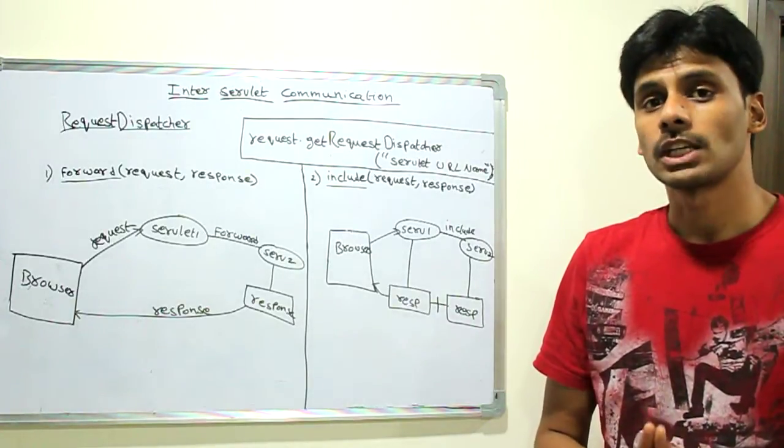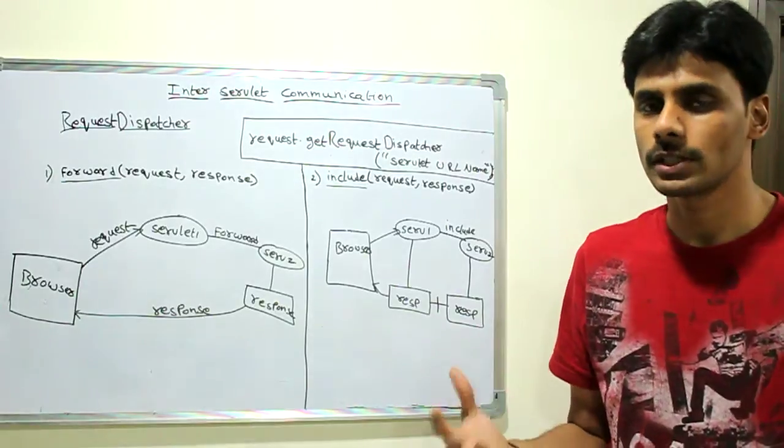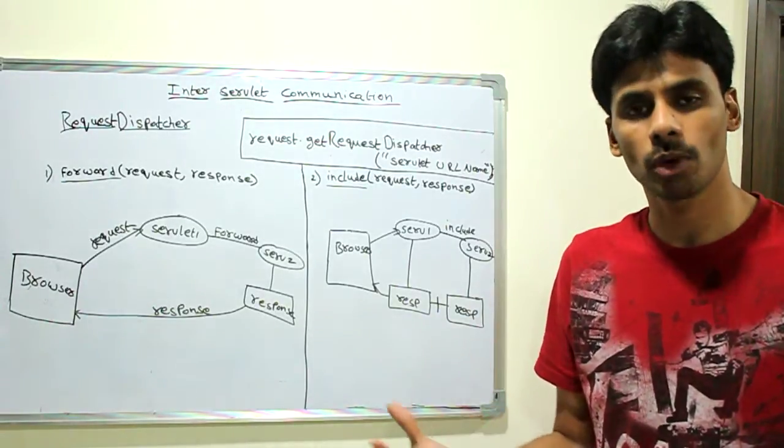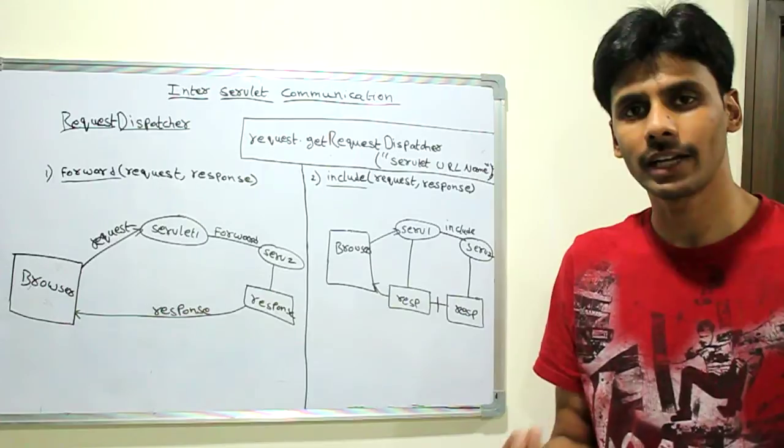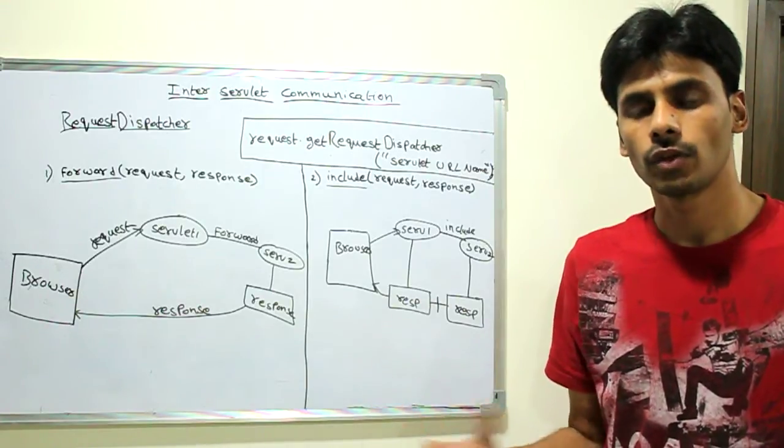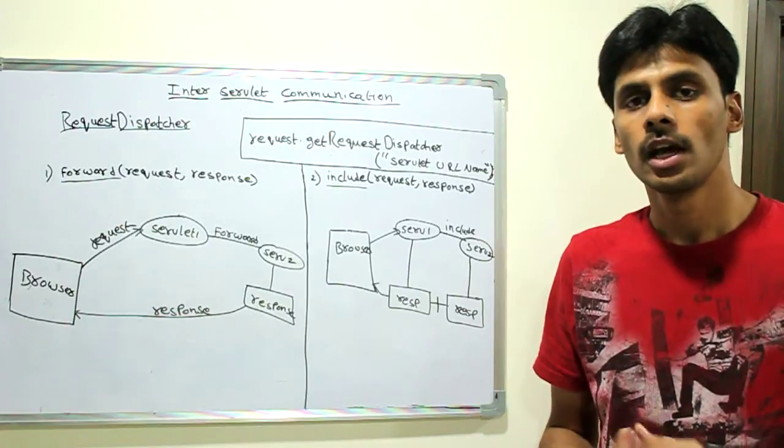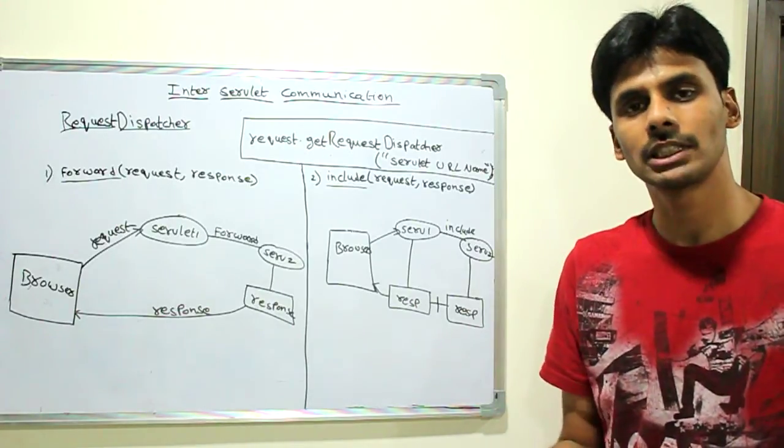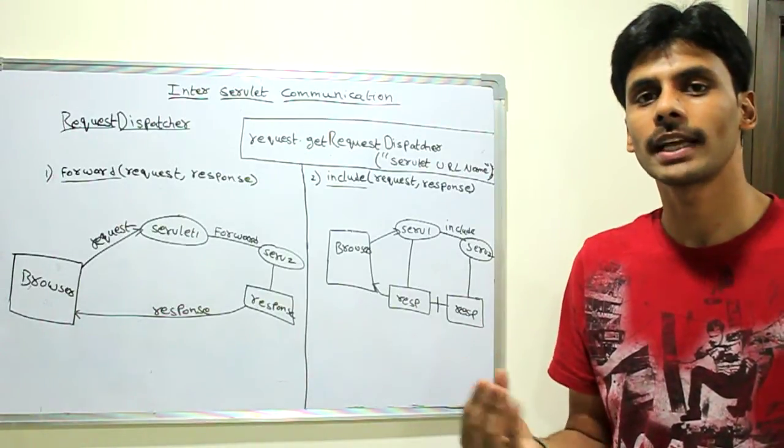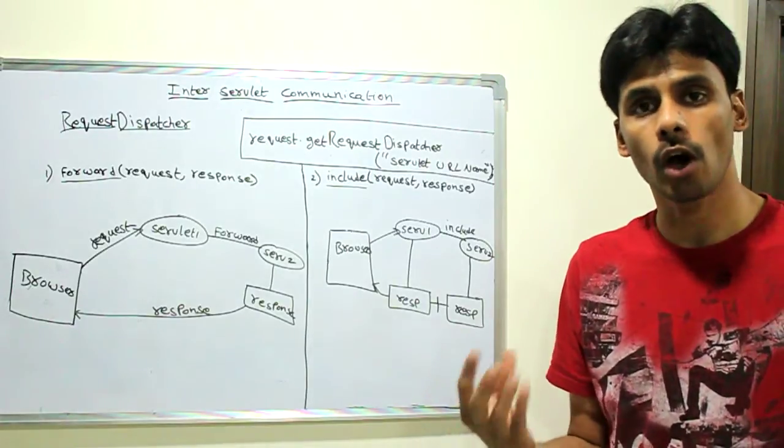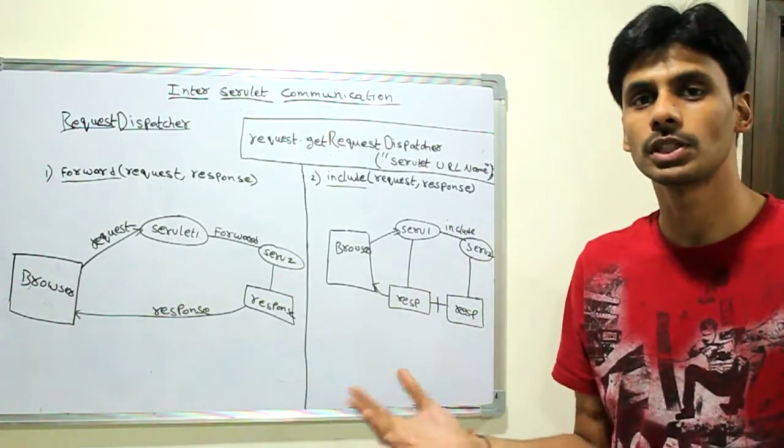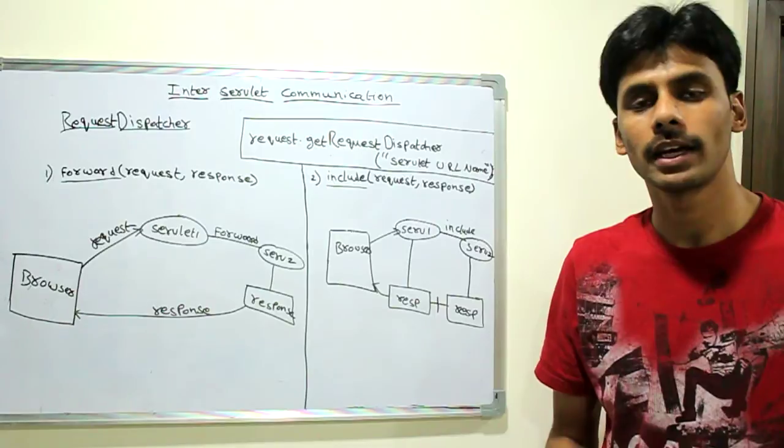Request dispatching or inter-servlet communication is a process in which one servlet can delegate the responsibility of a particular functionality to another servlet. So if we have a complex functionality that has to be implemented using servlets, we can process a part of it in one servlet, and this servlet can then forward the request and response objects to another servlet which can perform the rest of the request processing.